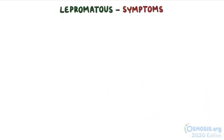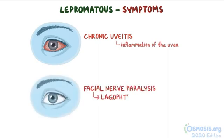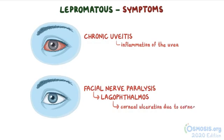With the lepromatous form, there can also be ocular involvement in the form of chronic uveitis, meaning the inflammation of the uvea, which is the pigmented layer of the eye. There might also be facial nerve paralysis that leads to lagophthalmos, which is the inability to close the eyelids completely. This can result in corneal ulceration due to corneal exposure and eye drying.